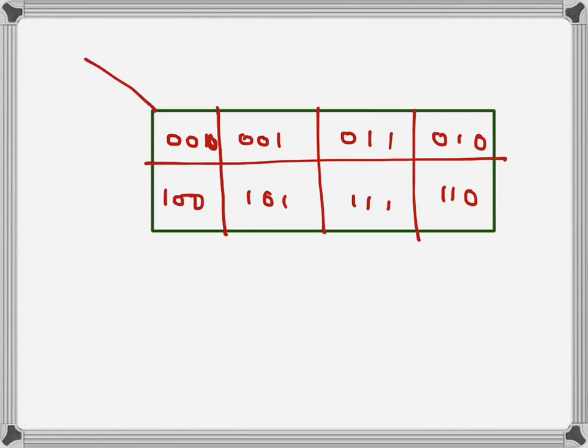If we want to write this in terms of A, B, and C, we place the most significant bit along the rows and the second and third most significant bits along the columns. The most significant bit in the top row is always zero, so that row corresponds to A equal to zero, meaning A-bar.